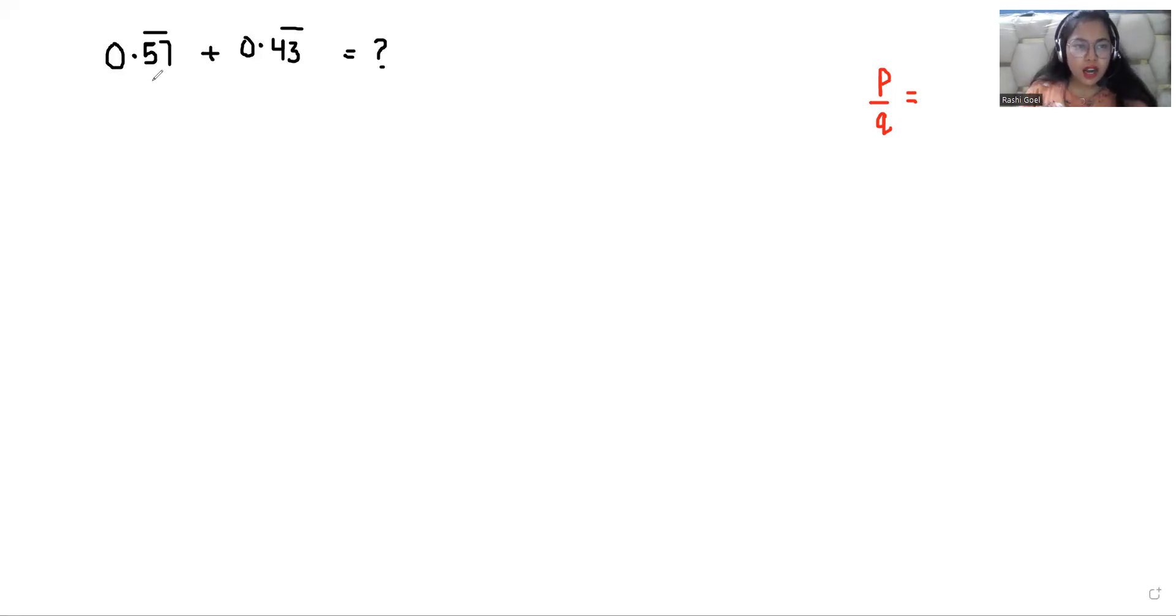So we will start the solution, how to find that number. So if I take X equals 0.57 bar, that means X equals 0.575757. That means it is repeating 575757.